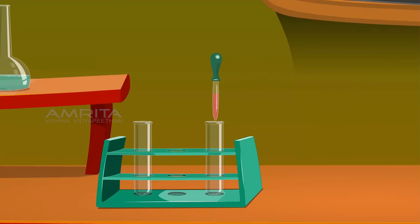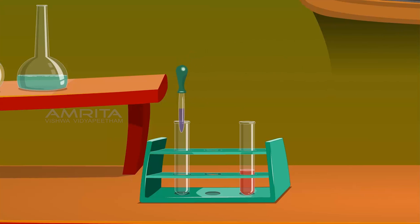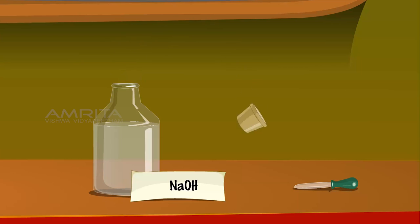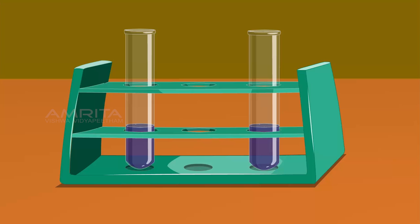Pour the red litmus solution into a test tube. Take the blue litmus solution and pour it into the other test tube. Take a few drops of NaOH solution from its bottle using the dropper. Add this to the test tube containing the red litmus solution and note the change in colour. The colour of the solution changes from red to blue.